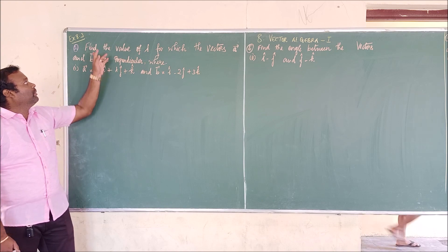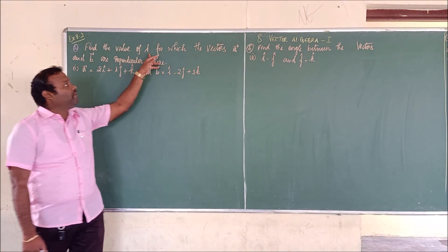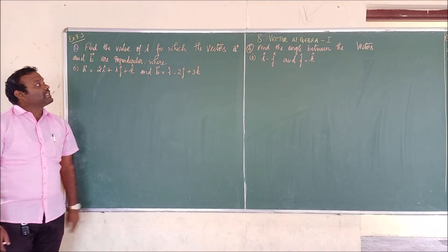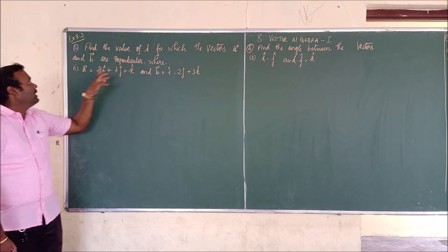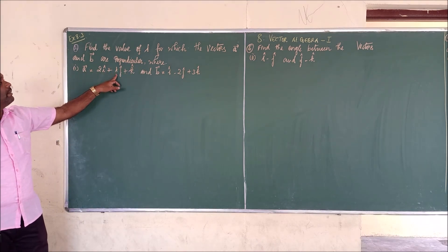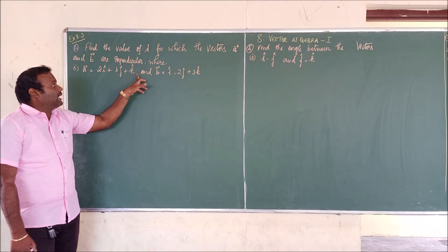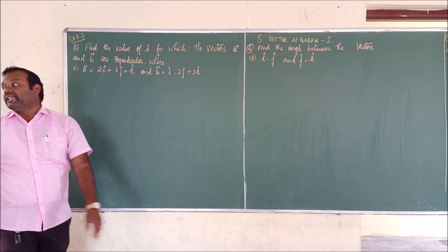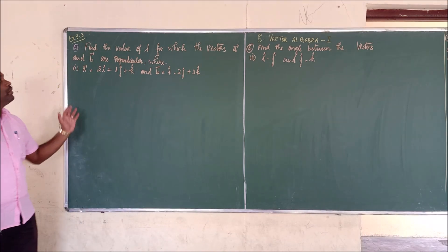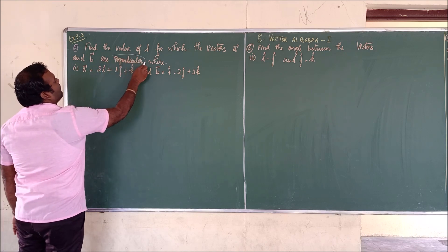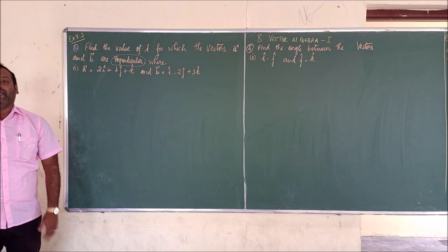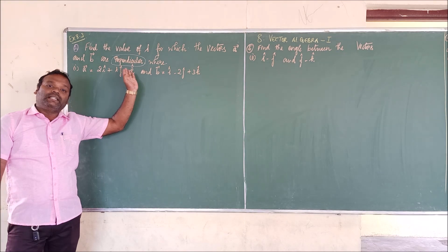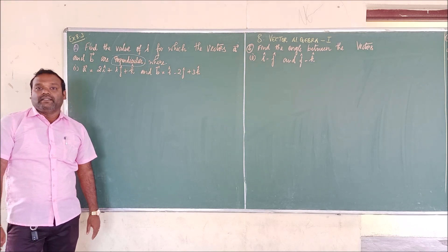Now we are going to see the second problem. Find the value of lambda for which the vectors a and b are perpendicular, where a vector equals 2i cap plus lambda j cap plus k cap, and b vector equals i cap minus 2j cap plus 3k cap. The given information is that the two vectors are perpendicular. We know that if two vectors are perpendicular, their dot product is equal to zero.